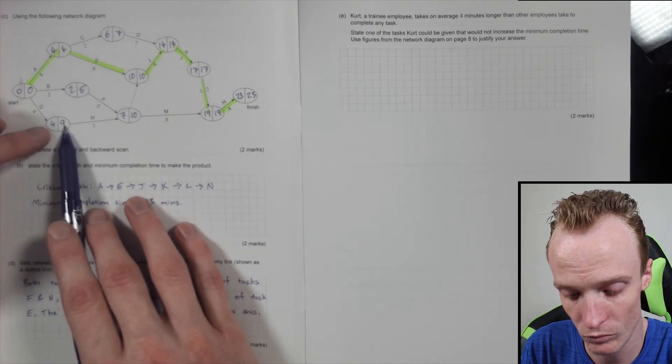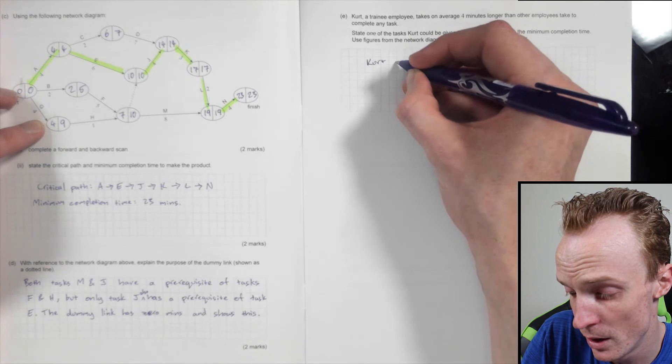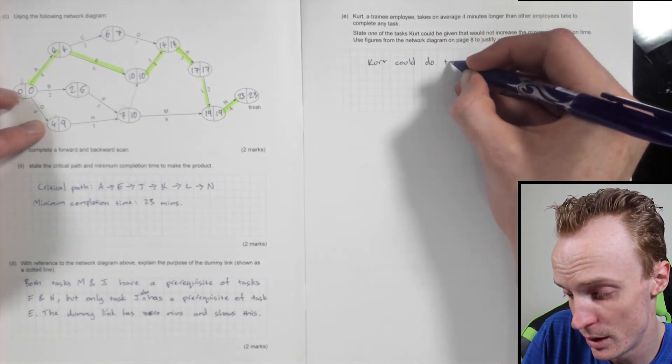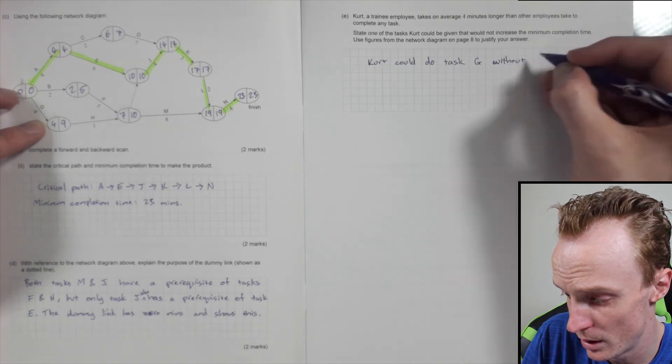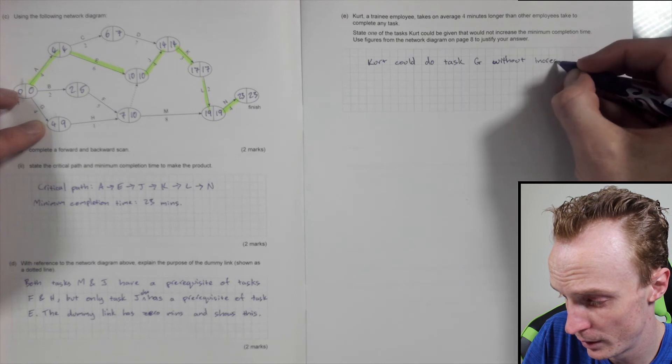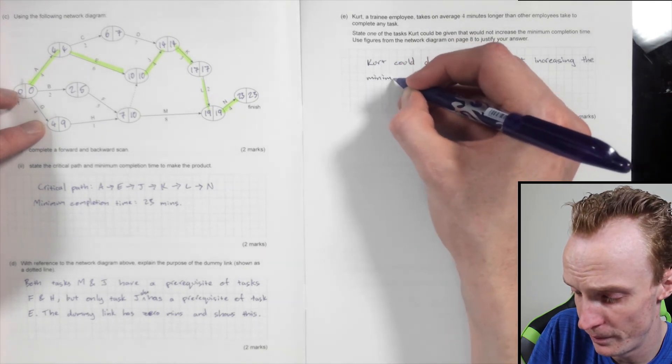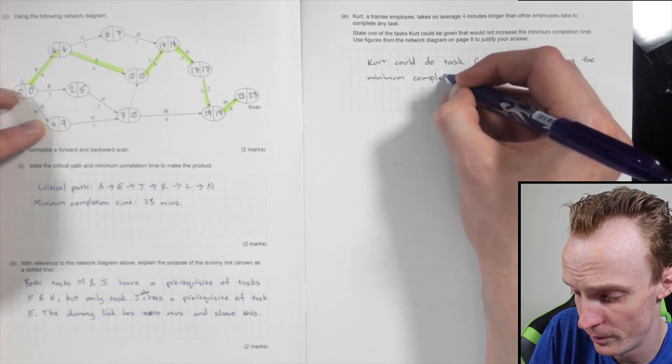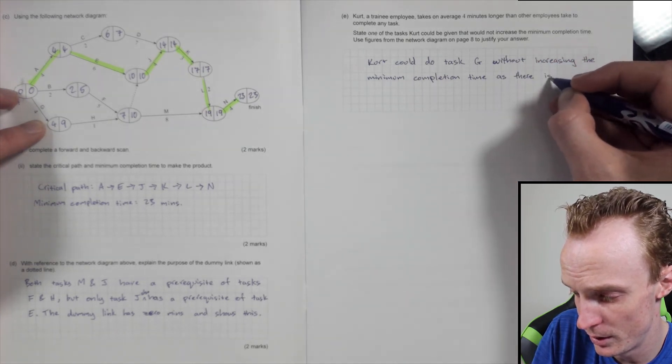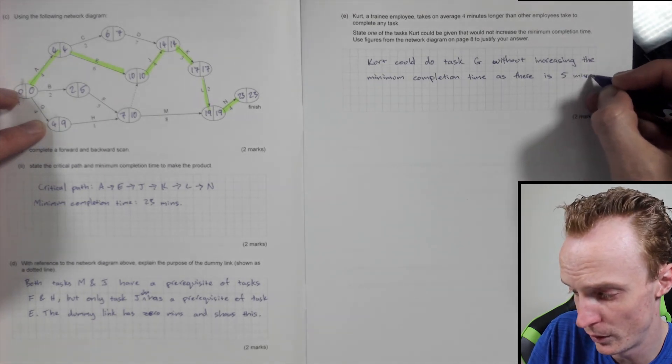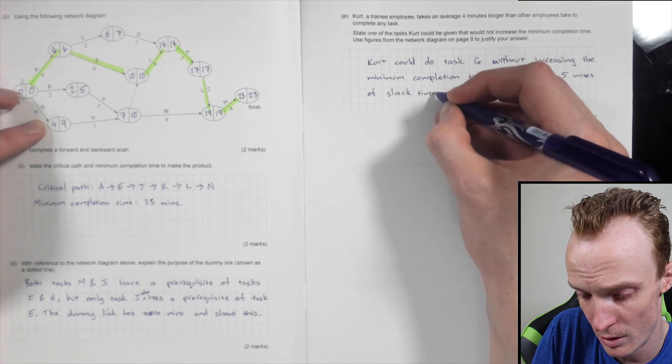So the slack time—let's give him task G. So Kurt, you only have to identify one, there is probably more than one, could do task G without increasing the minimum completion time, as there is five mins, that's mins, of slack time for this task.